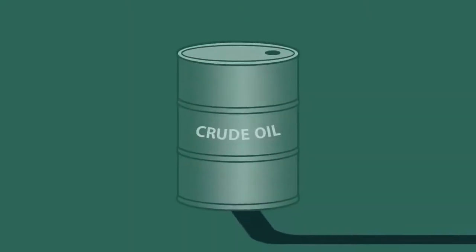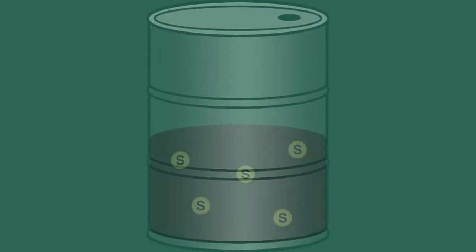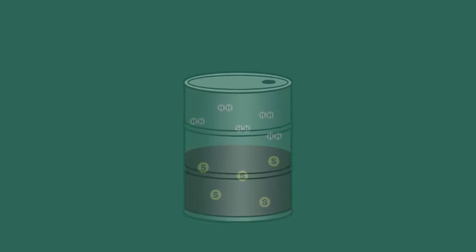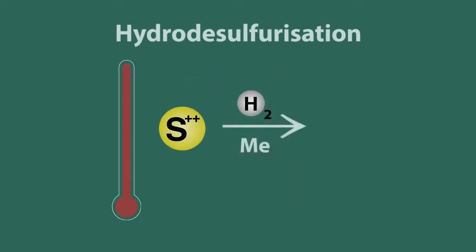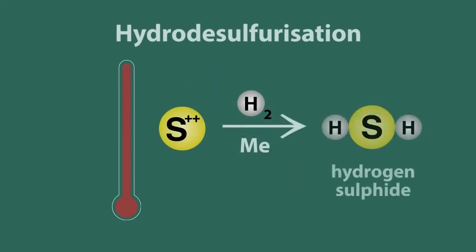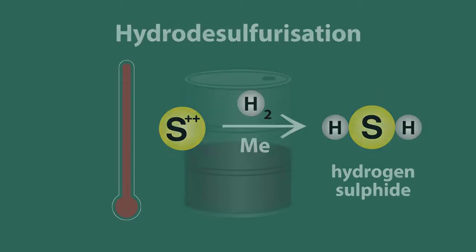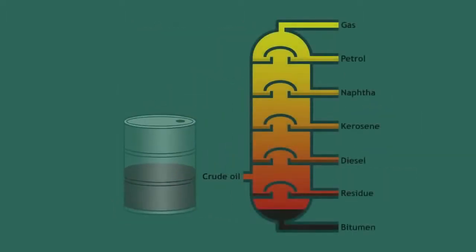In oil refineries, sulfur is removed from crude oil by reacting it with hydrogen. This reaction, known in industry as hydro-desulfurization, takes place at high temperature with a metal catalyst to produce hydrogen sulfide — that bad egg smell and a very poisonous gas. When this purified oil is refined into various fuels, it is virtually free of sulfur.